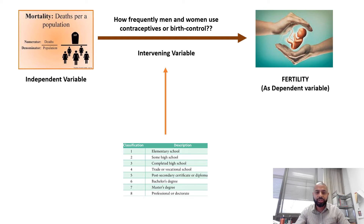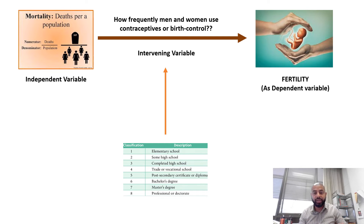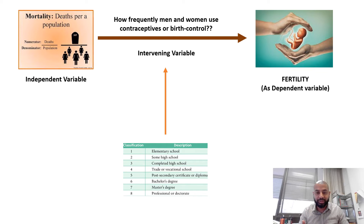The first example of an extraneous variable here is the education of people. If people are highly educated and feel they should do family planning and not have more than one child per family, that plays a role — even without using contraceptives, educated people may choose to limit family size. So to recap: the rate of mortality is higher because the rate of fertility is lower, but why is fertility lower? Is it because people can't have children, or because they are choosing not to? And if choosing, is it because they are choosing to have only one child per family due to education?